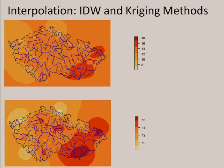Now, moving to interpolation. As you may know, there are many different methods and algorithms for interpolation available. Two examples are IDW — inverse distance weighted — which is called a deterministic method. The second is Kriging, which is called a geostatistical method. Kriging, compared to IDW, also gives you more information about the errors of your prediction.